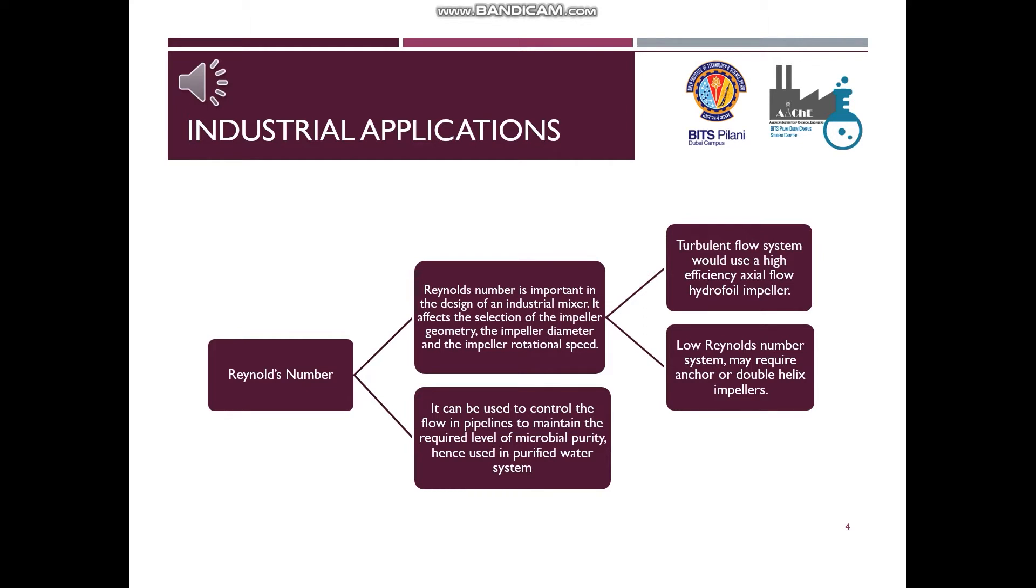Reynolds number is important in the design of an industrial mixer. It affects the selection of the impeller geometry, the impeller diameter, and the impeller's rotational speed. Turbulent flow system would use a high-efficiency axial flow hydrofoil impeller. Low Reynolds number system may require anchor and a double helix impeller. Finally, Reynolds number can be used to control the flow in pipelines to maintain the required level of microbial purity, hence used in a purified water system.